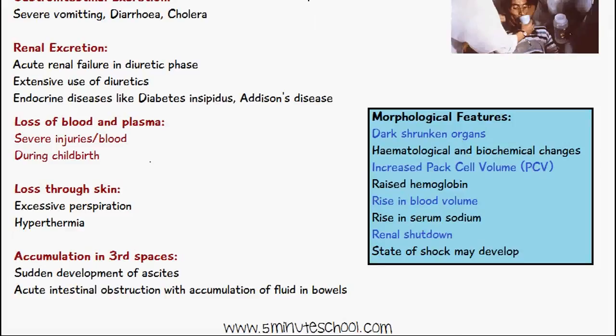Acute intestinal obstruction with accumulation of fluid in the bowels is another cause. The morphological features of dehydration — what it actually looks like — include dark shrunken organs, hematological and biochemical changes, increased packed cell volume, and raised hemoglobin levels.